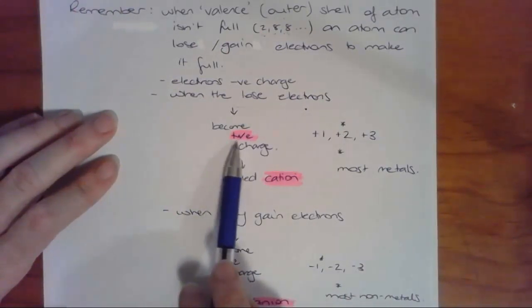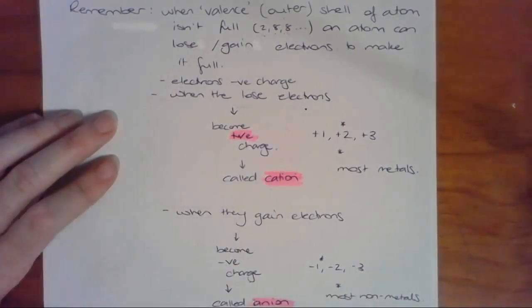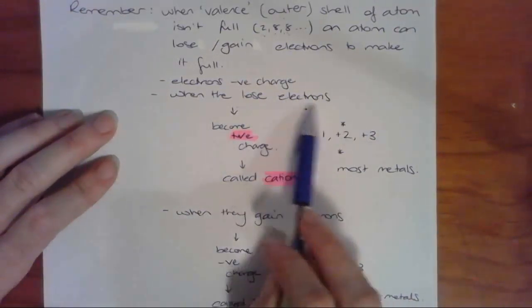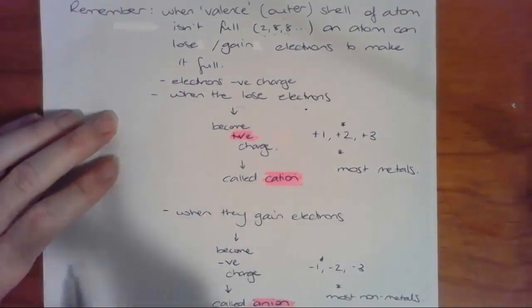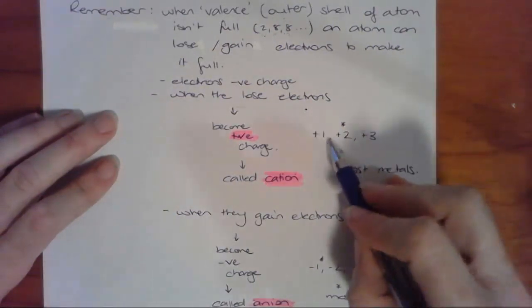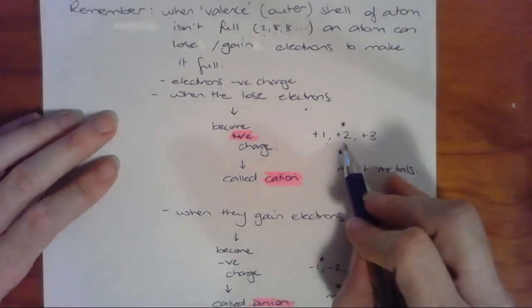When we lose electrons, it becomes an overall positive charge because if you have a neutral atom and you're losing electrons which have a negative charge, then your overall charge is positive. And we call that a cation, and we represent that based on the amount of electrons have been lost: +1, +2, +3, etc. And that's most metals.